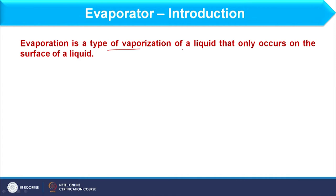Let us introduce evaporators. Evaporators are units where we concentrate the feed — where the feed is concentrated by removing the solvent. As far as evaporation is concerned, it is a type of vaporization of liquid that only occurs on the surface of the liquid. Evaporation is basically the process where liquid is converted into vapor, but only at the surface.